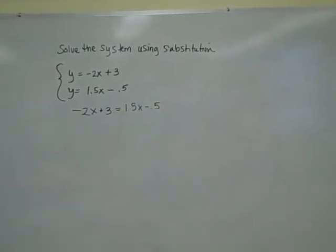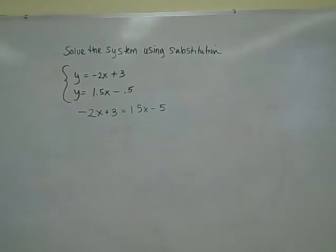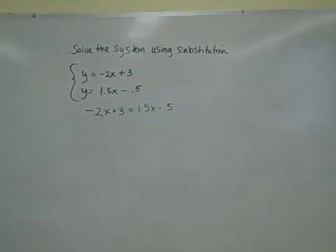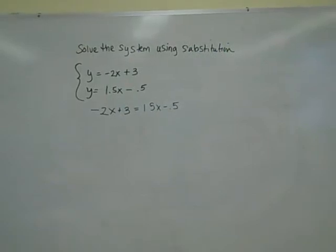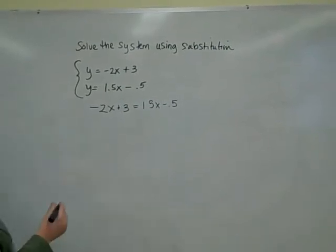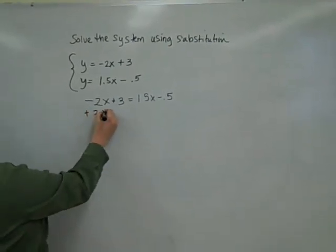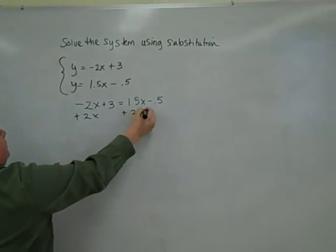From here, we need to use our balancing method and get all of our x's on one side of the equation and all of our numbers on the other side. So we're going to add 2x to both sides of our equation.